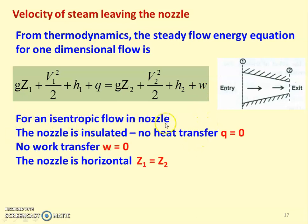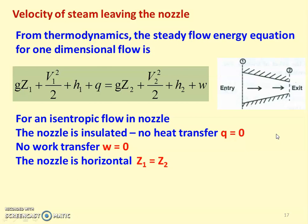We assume isentropic flow in the nozzle. For isentropic flow, we insulate the steam nozzle so there is no heat transfer, meaning Q = 0. The purpose of the steam nozzle is to increase kinetic energy by decreasing enthalpy; as steam flows through the nozzle there is no work done, so W = 0. We also assume the nozzle is horizontal, so Z1 = Z2.